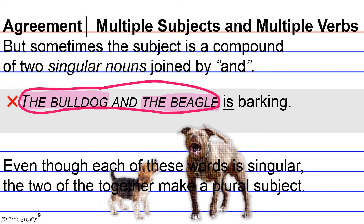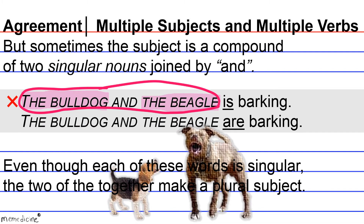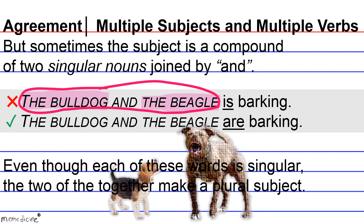Let's correct our verb, making it plural. The bulldog and the beagle are barking. This is a correct statement.